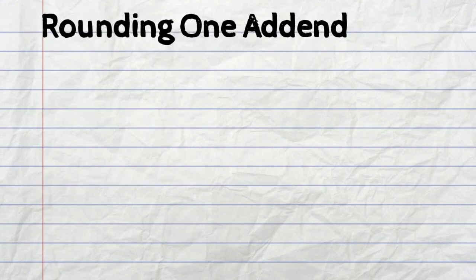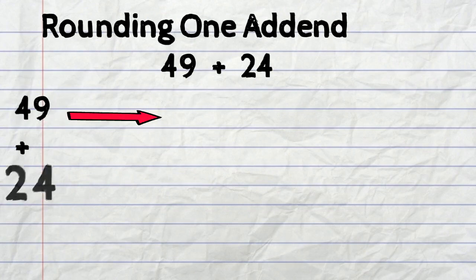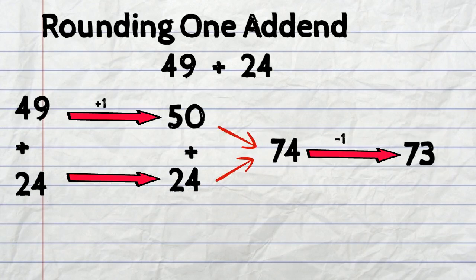So the numbers that we're going to add now are 50 plus 24 and that's a bit easier since 50 is ending in 0. So 50 plus 24 equals 74. But since we added 1 extra to the original equation, we will have to subtract 1 from the final answer.